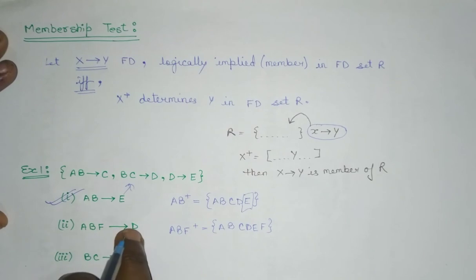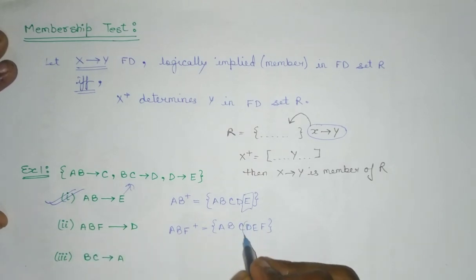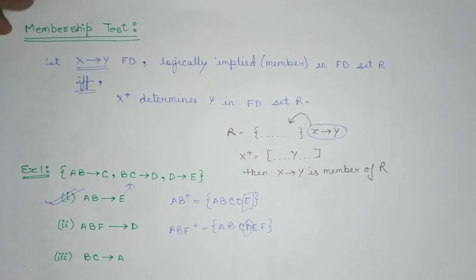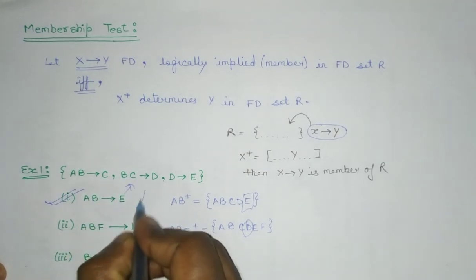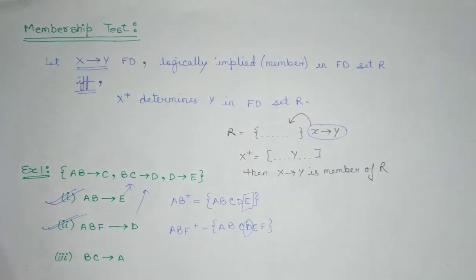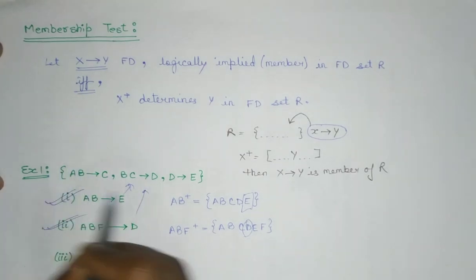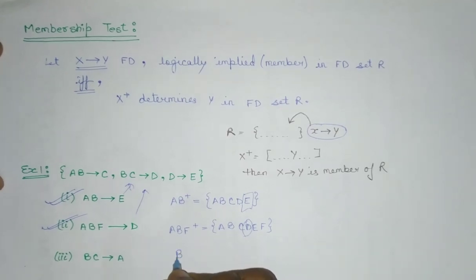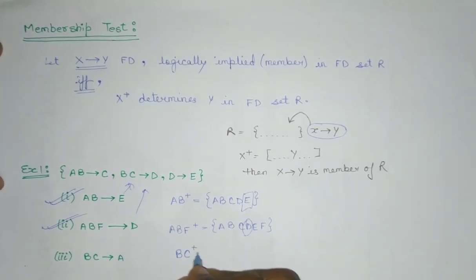Here also you can see that ABF is giving us D. We are able to find out D in the ABF closure. That means ABF belongs to D is a member of this FD set. So this one is also member of this FD set. Now we have to find out whether BC implies A is a member of this FD set or not. For that, what we have to do? We have to find out BC closure.